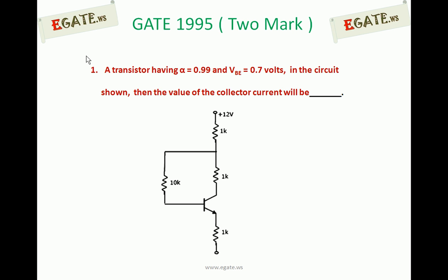Look at the diagram. A transistor having alpha equal to 0.99 and VBE equal to 0.7V in the circuit shown. We need to calculate the collector current IC directly, as no options were given for this question.